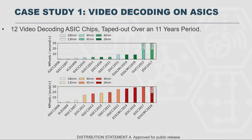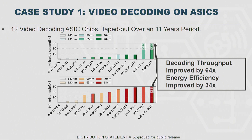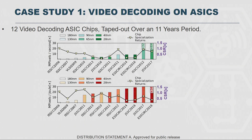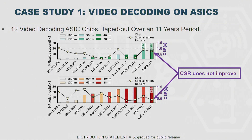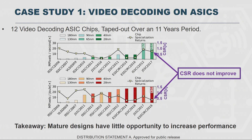Now let's look at a couple of case studies. The first case study is ASIC video decoding chips, applied over different time scales, looking at performance and energy efficiency. We can see that things got a lot better — we're getting 64x better throughput and a lot better energy efficiency. But when we apply chip specialization return to see how much benefit came from actually building a specialized architecture, we find that it's basically been flat. This is a relatively mature design space; H.264 decoder chips have been around for a long time, and the takeaway is that mature designs have relatively little opportunity to increase performance going forward.